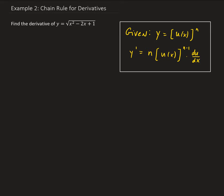To do this, we need to apply the general power rule, which is what you see in this box here. Given that y is equal to u(x) raised to the n power, and assuming that u is a differentiable function, we bring down the n, giving us n times u(x) to the power of n minus 1, and then we take the derivative of u with respect to x.